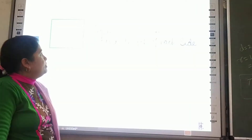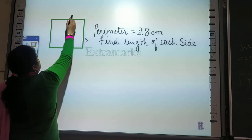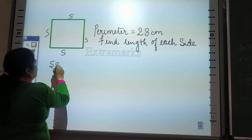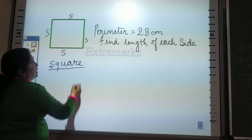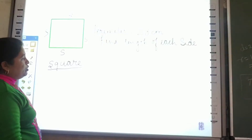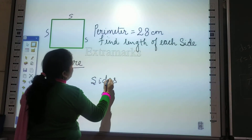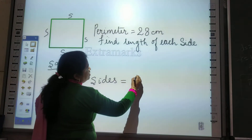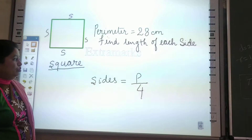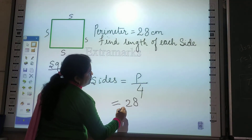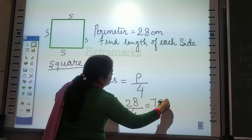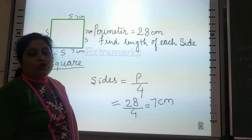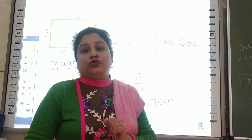The next figure is a square. In a square, all sides are equal — that is the key property. If you have to find the side of a square and the perimeter is given: to find the perimeter of a square we multiply the side by 4. So to find the side, we divide the perimeter by 4. For example: 28 divided by 4 equals 7 cm. Please revise this video at least 2 or 3 times because in the next 2 classes we will do practice questions.